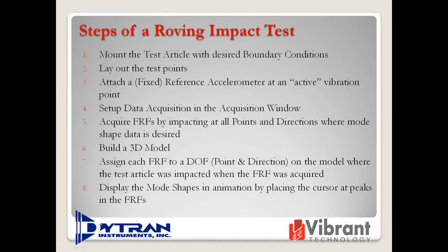The following steps are carried out to obtain the experimental modes of the I-beam using Emiscope. Step 1: Mount the test article with desired boundary conditions. The beam is placed on foam to simulate a free-free environment. Step 2: Lay out the test points. The points of impact are clearly marked on the beam. Step 3: Attach a fixed reference accelerometer at an active vibration point. The accelerometer is fixed at point one.